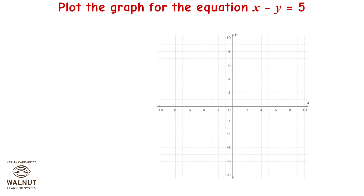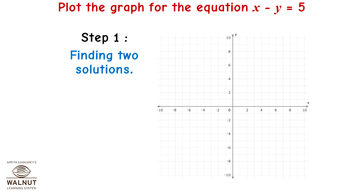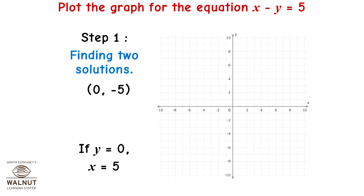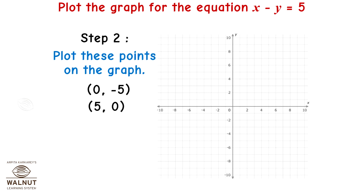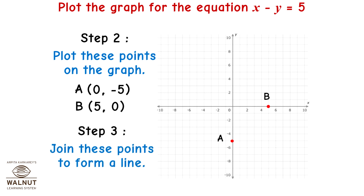Plot the graph for the equation x - y = 5. Step 1: Finding two solutions. If x = 0, y = -5. If y = 0, x = 5. Step 2: Plot Point A (0, -5) and Point B (5, 0). Step 3: Join these points to form a line.